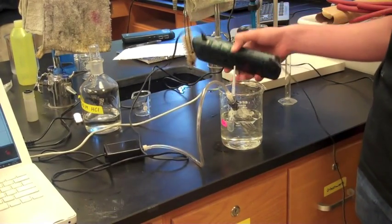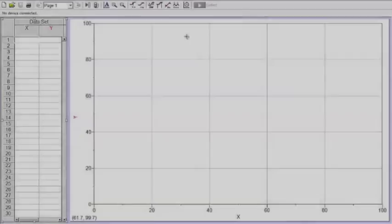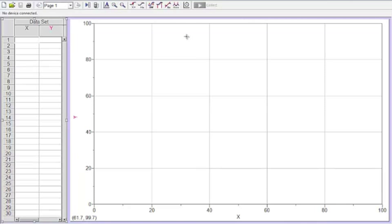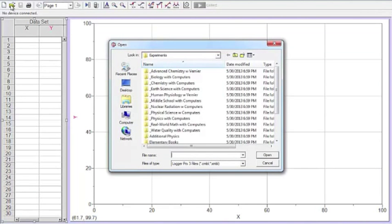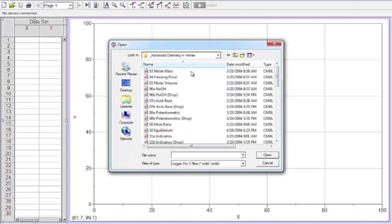Next, it is time to set up LoggerPro. Setting up LoggerPro for this experiment is really easy. All you have to do is hit the Open File button, select Advanced Chemistry with Vernier, and click on Lab12 labeled Peroxide.